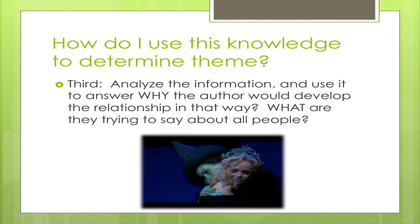The third thing you need to do is analyze all that information and use it to answer why the author would develop the relationship in that way. So what are they trying to say about all people? In the case of Glinda and Elphaba, one argument you could come to ultimately is that every person possesses the ability to be beautiful or the ability to be wicked. The author's comment on the human condition is that we all have the full range of emotional possibility within us, and it is up to us to develop our own strengths, but also to find strength in others — to find the characteristics and qualities we wish we had in other people and use those as models to make our own lives richer and better.